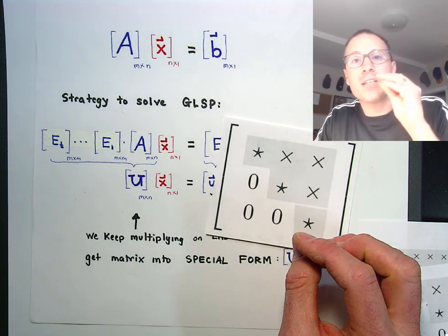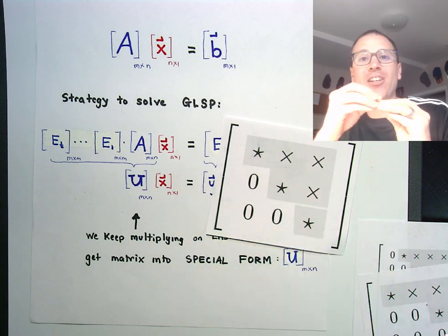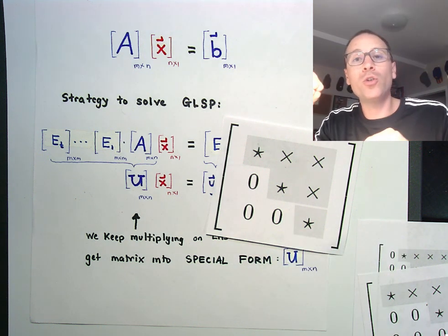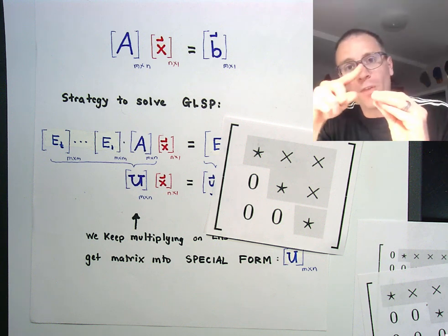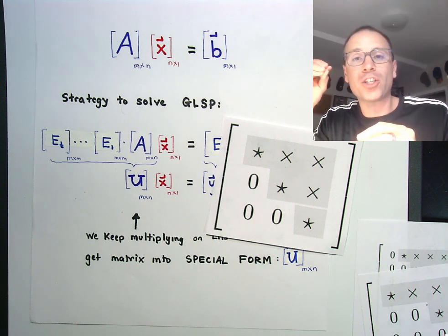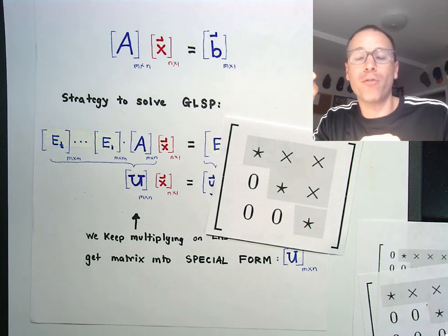It's kind of like single variable derivatives get generalized into the gradient, so too, upper triangular with non-zero diagonals gets generalized into row echelon and reduced row echelon forms.